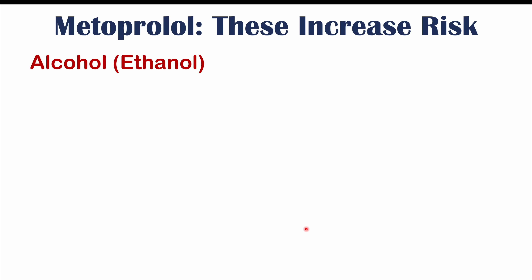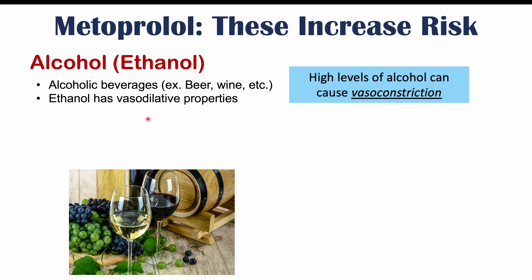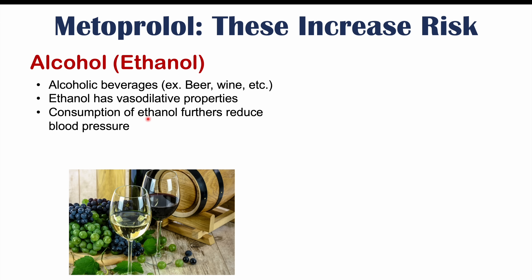The first thing to avoid is alcohol or ethanol — beverages like beer and wine. Ethanol has vasodilative properties, meaning it can increase dilation of blood vessels and lead to reductions in blood pressure. Since metoprolol also reduces blood pressure, taking both together can reduce blood pressure too much, causing hypotension, dizziness, and related issues.